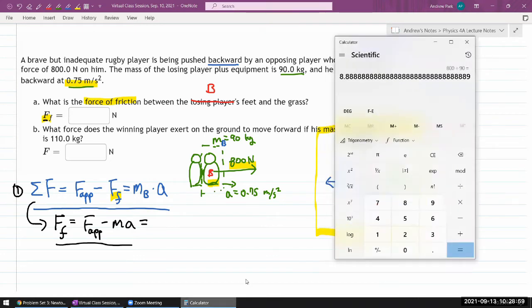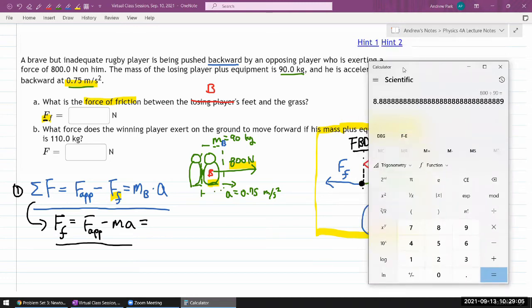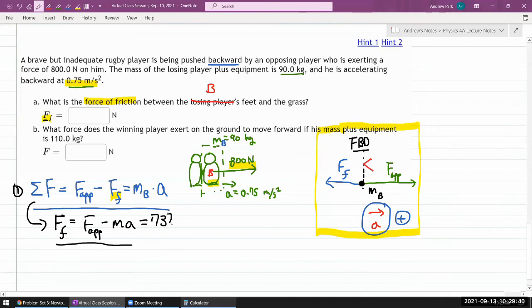Okay, so let me plug in the numbers. My applied force is 800 newtons minus the mass 90 kilograms times the acceleration 0.75, is equal to, I get a positive answer and that's what I was expecting so that's good. When I construct these equations I usually do it expecting my variables will be positive, so if I ever get a negative answer it will be kind of an alert to me that something went wrong. So 732.5 newtons. Okay so that's going to be the friction force.